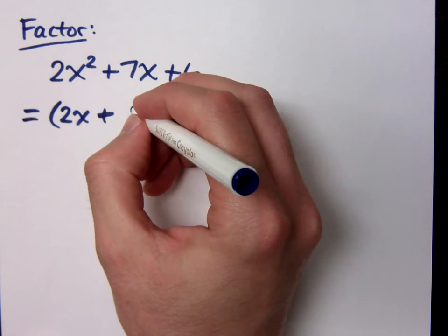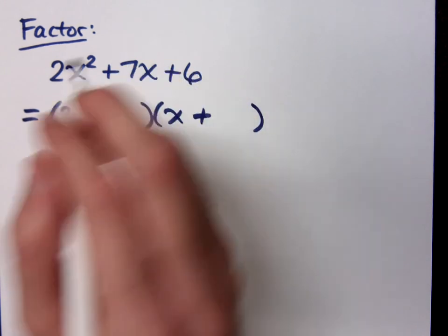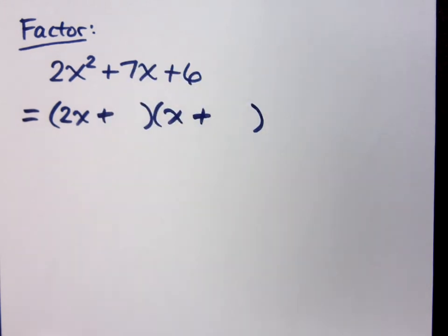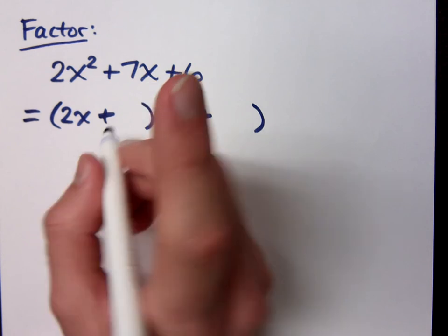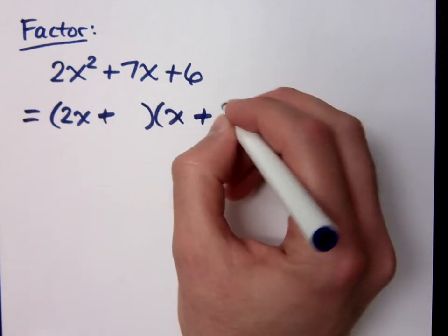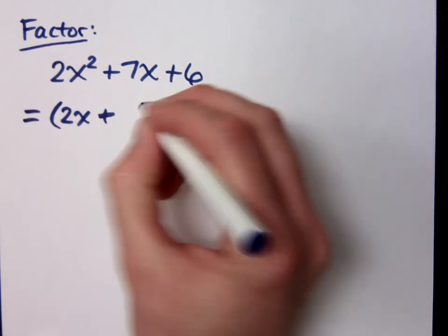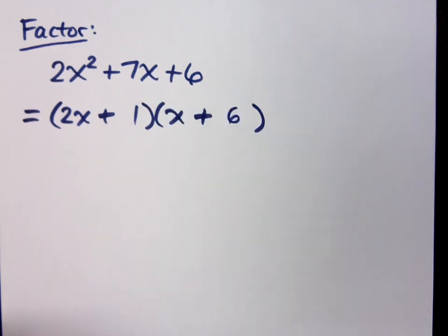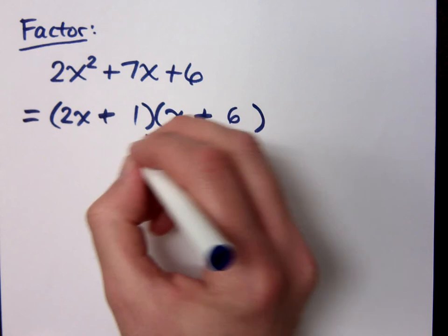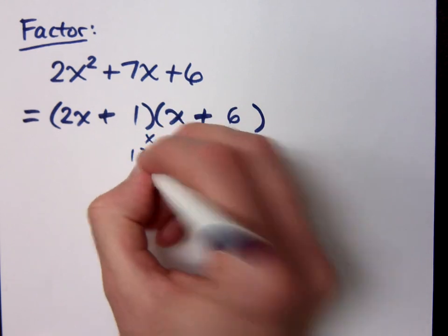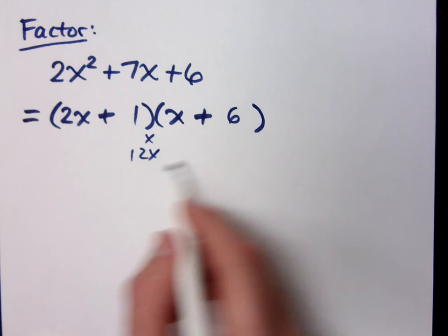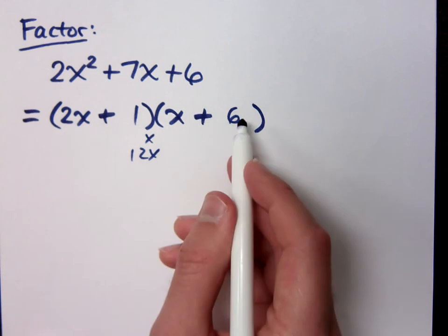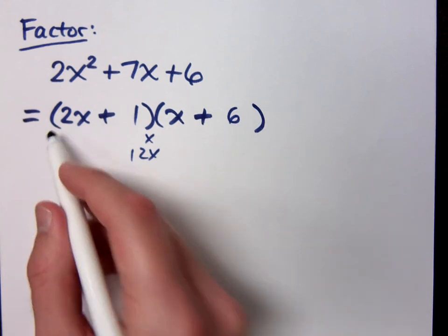Because I multiply 1 times 2 — there's a 2 there. Here's some tricks I want to show you guys. If I put the 6 and the 1 here, that gives me x and 12x — that's wrong, right? That's 13. So you can see the 6 times 2: it's not just 6, it's 6 times 2x.